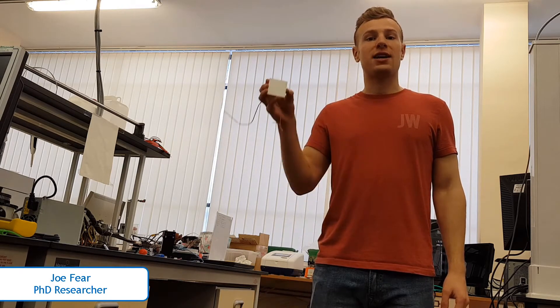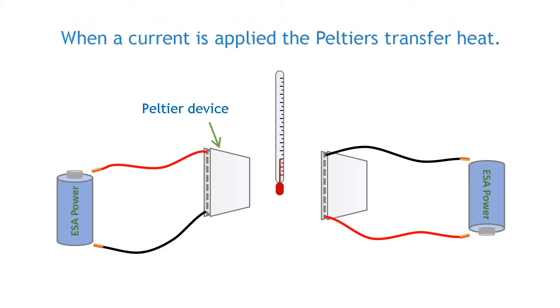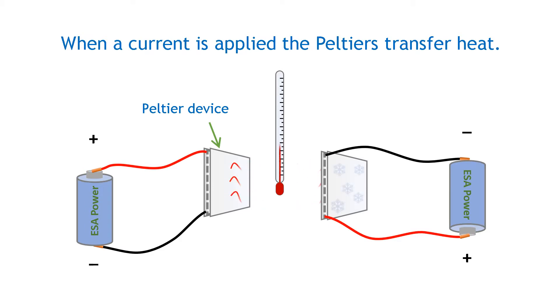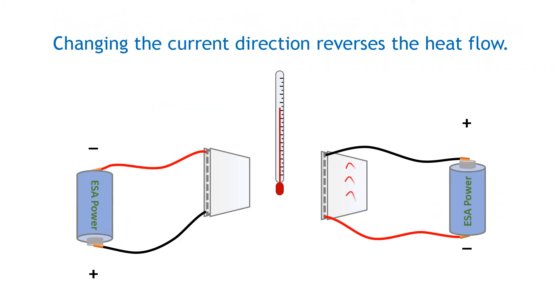Our proposed apparatus to heat and cool our test rig is through the use of Peltier elements. A Peltier element is a thermoelectric heat pump that transfers heat from one ceramic plate to the other. Through the application of a current one side of the device heats up whilst the other cools. By changing the direction of the current we can reverse this effect.